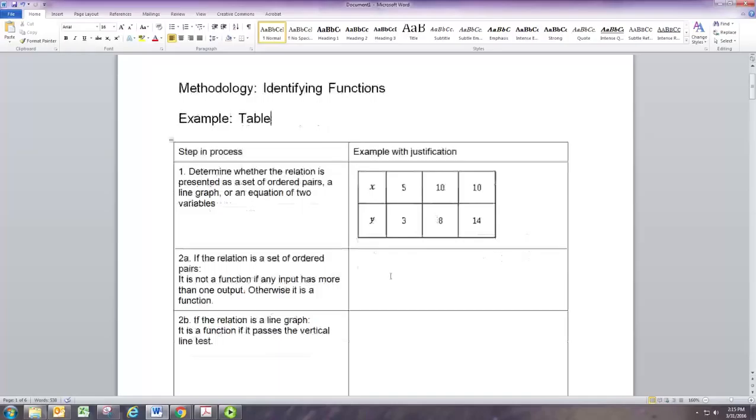If you have a set of ordered pairs, what you want to look for is an input that has more than one output. So that means if you're doing an xy table, you look for an x value being repeated and then the two y values are different.